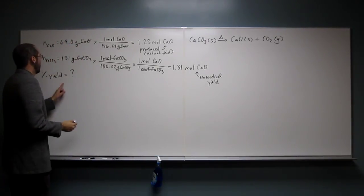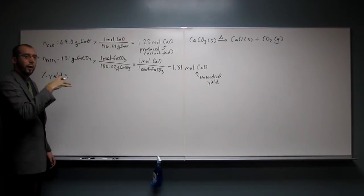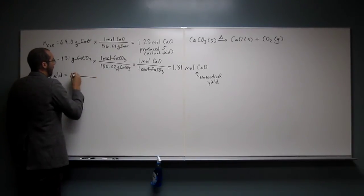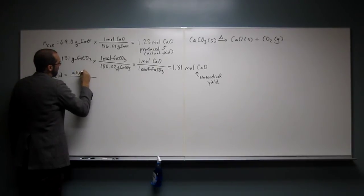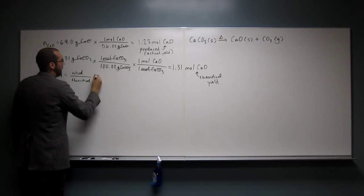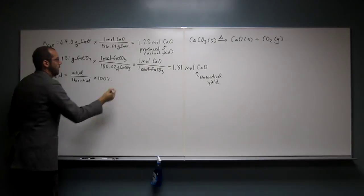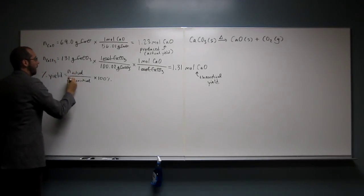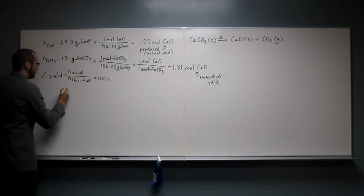So the percent yield. Remember, it's the part divided by the total. In this case, it's going to be the actual divided by the theoretical times 100%. This would be the number of moles of calcium oxide.